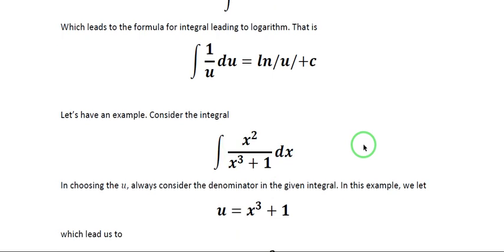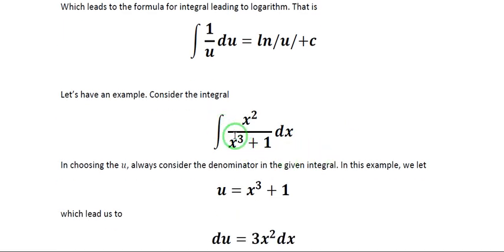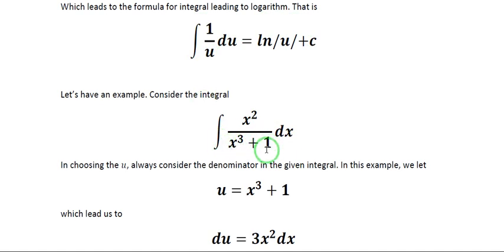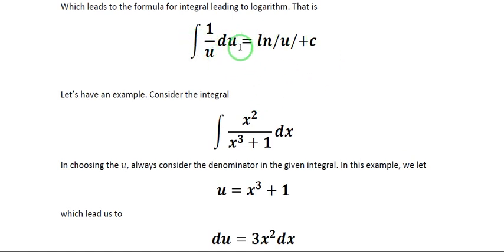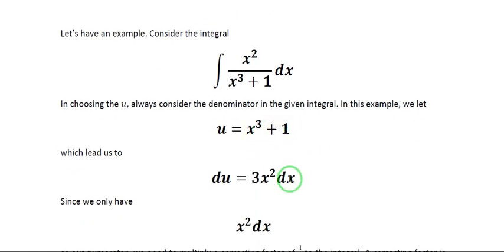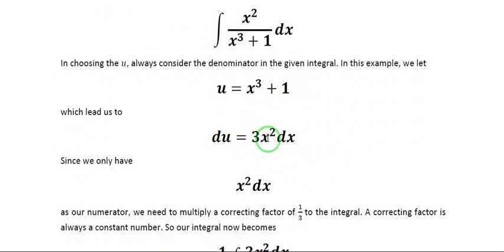Our first example is the integral of x squared all over x cubed plus 1 dx. This is a fractional form. To target the formula 1 over u, we let our denominator x cubed plus 1 as our u. Always let the denominator be your u if you are going to apply the formula of integral leading to logarithm. So if u is x cubed plus 1, then du is 3x squared dx.